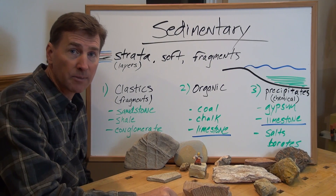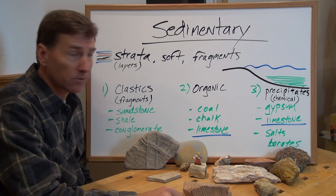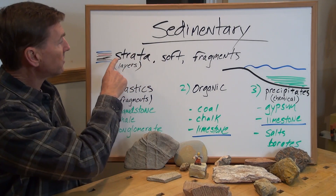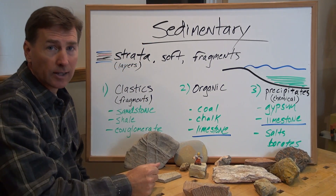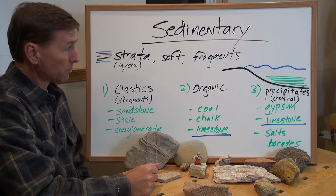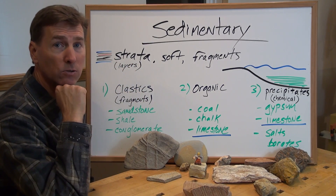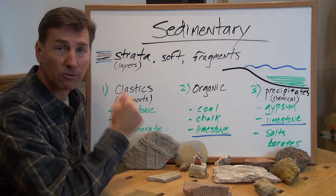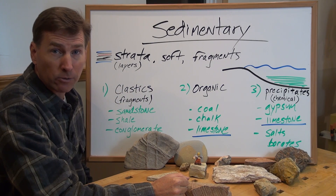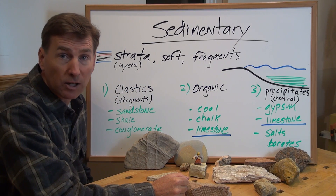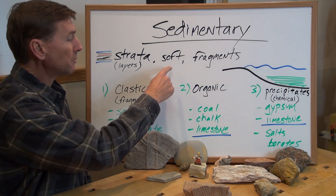So here we have sedimentary rocks. I want to talk about some of the characteristics, and then we have three subtypes. The characteristic of a sedimentary rock is that it has strata — those are layers. All rocks do eventually crumble into little fragments, and those fragments can then be re-welded together through natural cements and through the enormous pressure of many layers building up. They're soft typically.